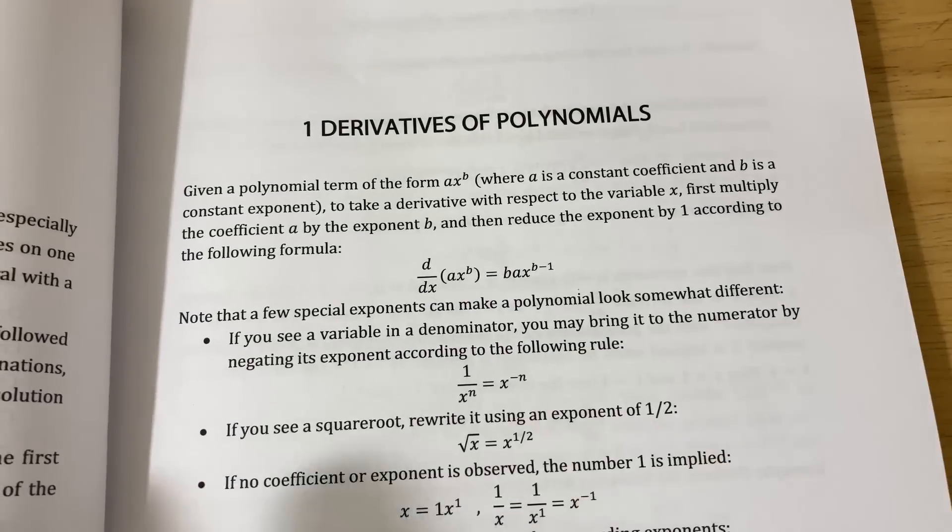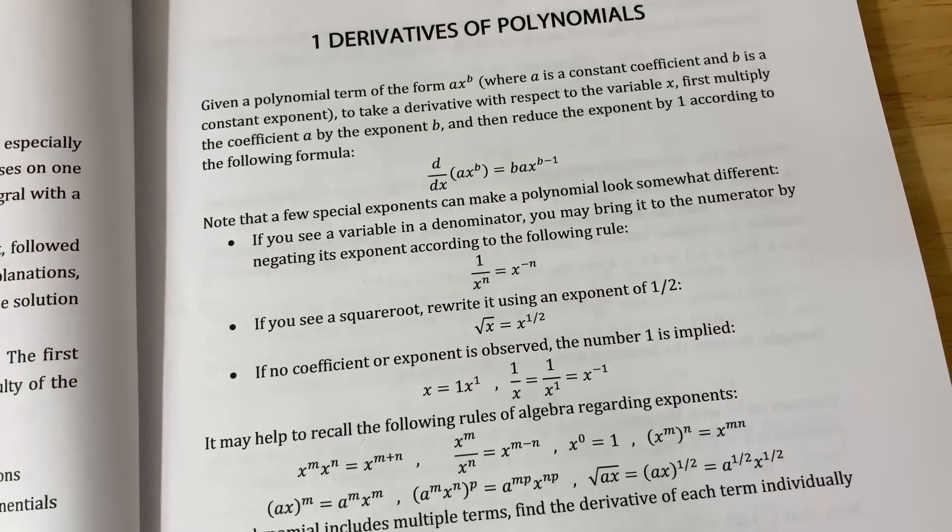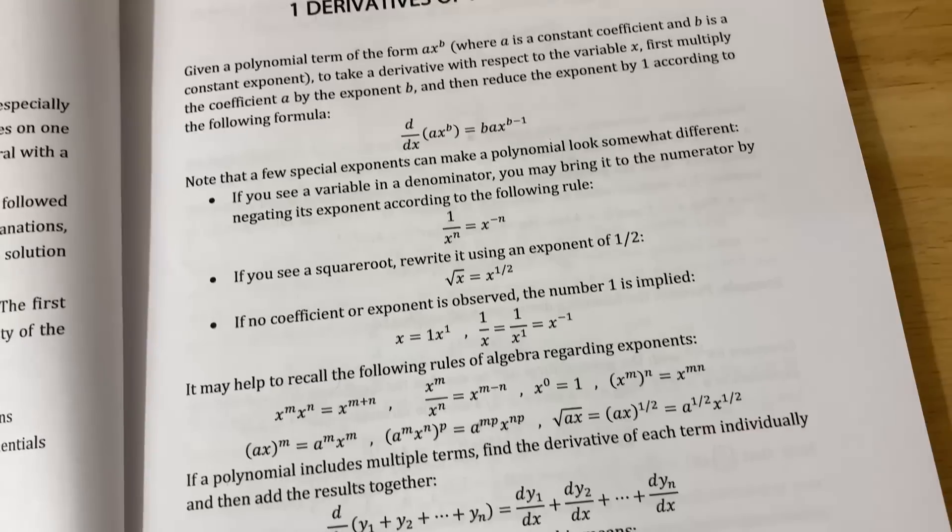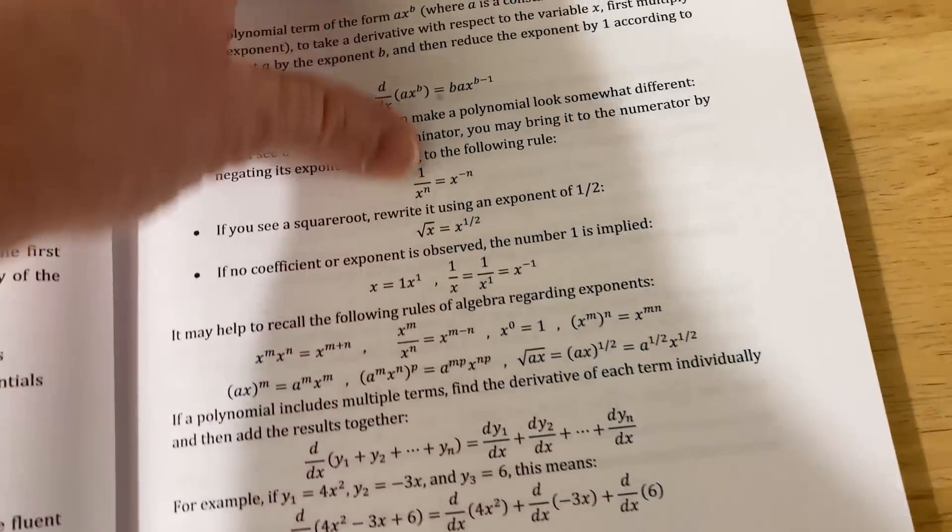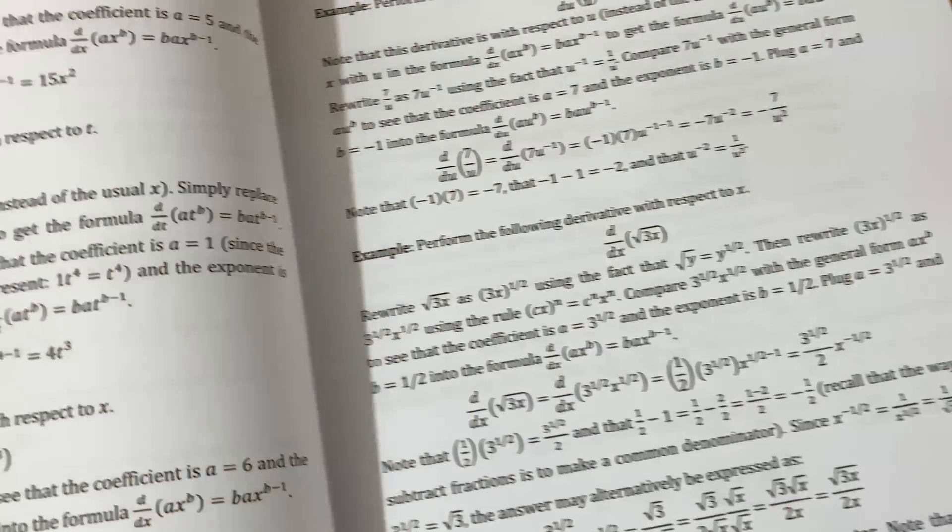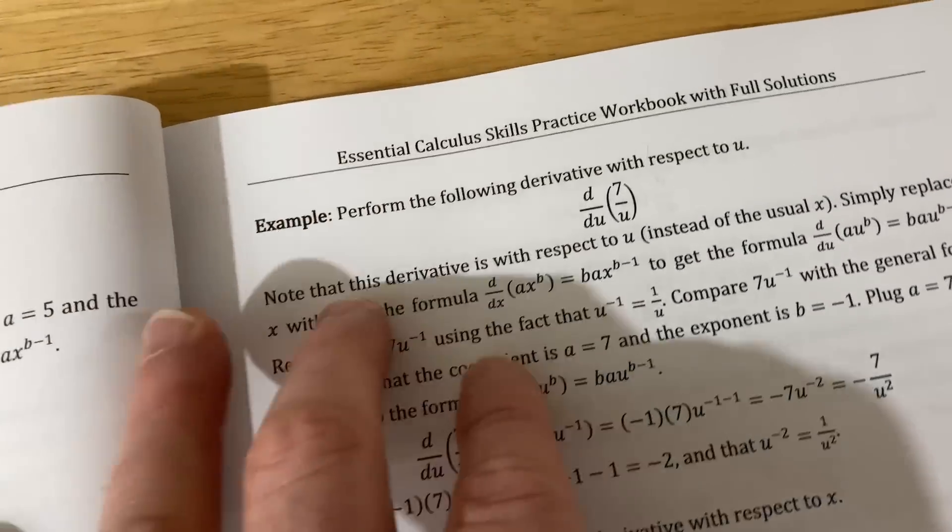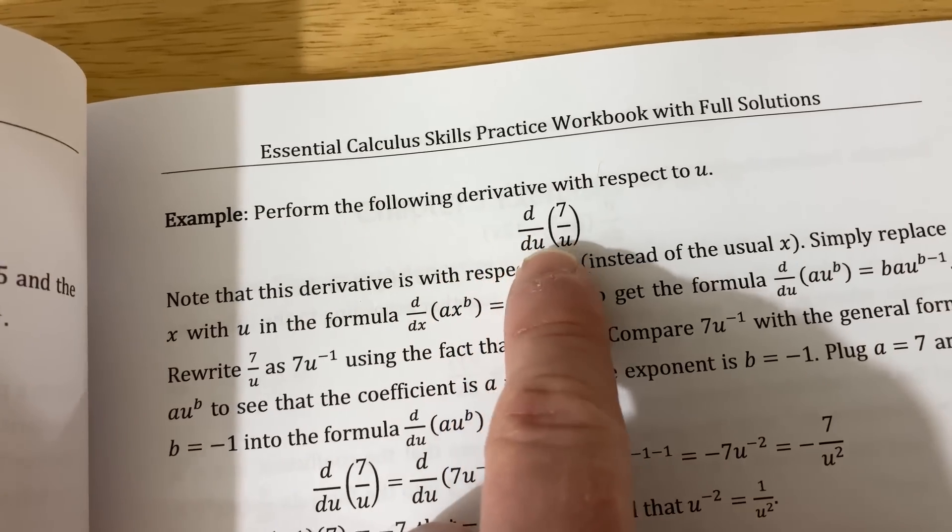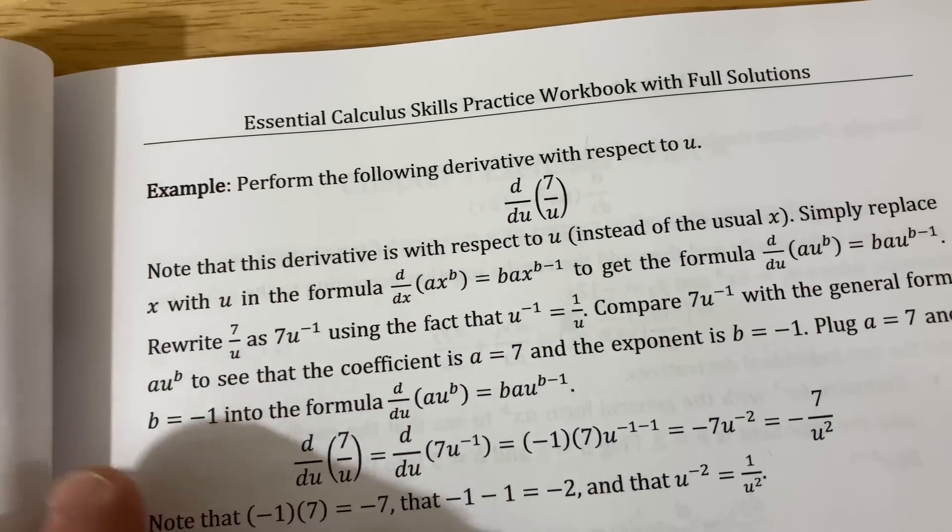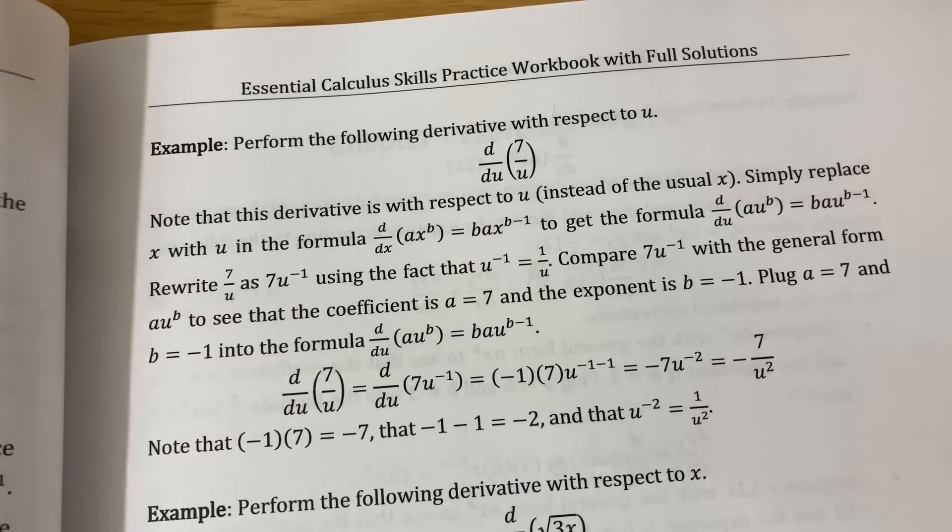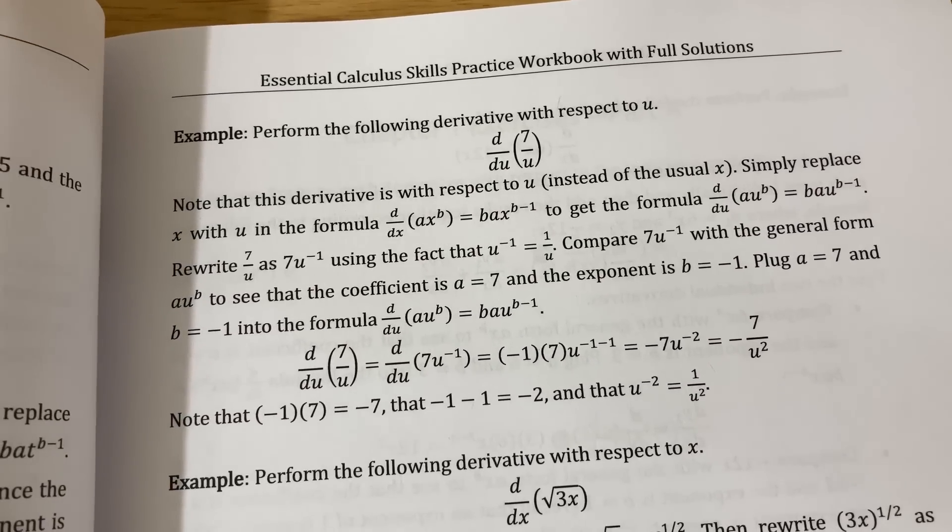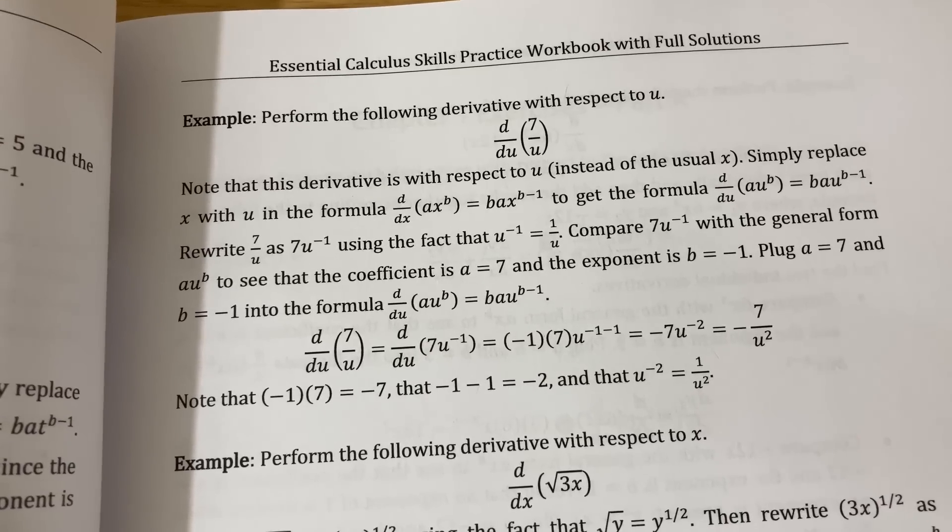First, there's the explanations. I feel like the explanations are extremely well written. It does not read like a textbook. Chris explains things in extreme detail and gives you all the steps. For example, here he's finding the derivative of 7 over u with respect to u. He explains everything in words. I feel like it's done a lot better than what you see in a traditional textbook.